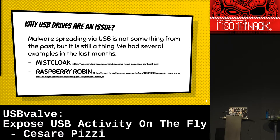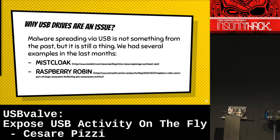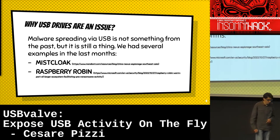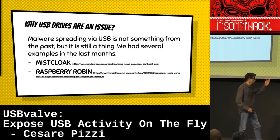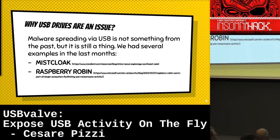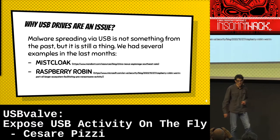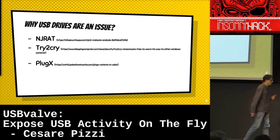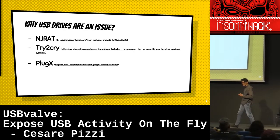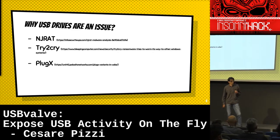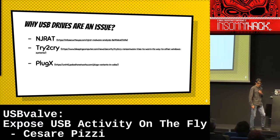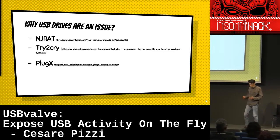The problem is USB drives, and why we may think that USB drives are still an issue in 2023. At the beginning I was thinking that malware spreading via USB was something from the past. It's not actually the case, because I started looking around and found that we have a lot of examples of malware still using USB to spread. I did a little research and I'm mentioning some of them here: MistClock, Raspberry Robin, NJRAT, TryCry, PlugX. Some of these names will recur in this presentation.